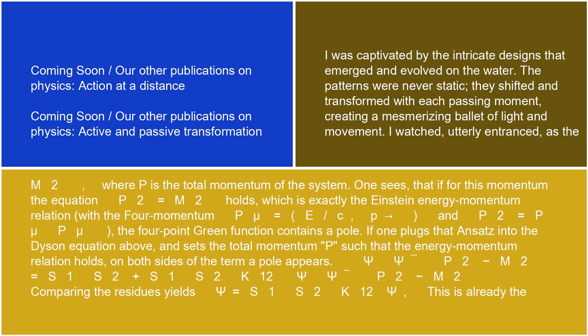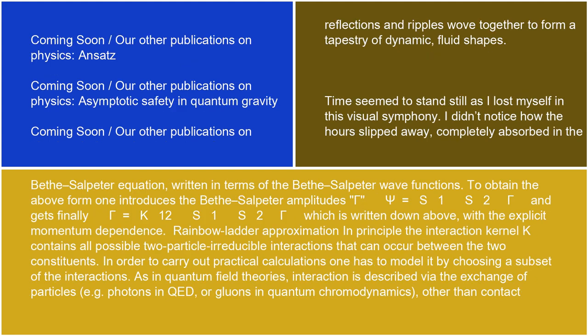One sees that if for this momentum the equation P² = M² holds, which is exactly the Einstein energy-momentum relation with the four-momentum P^μ = (E/c, P) and P² = P^μ P_μ, the four-point Green function contains a pole. If one plugs that ansatz into the Dyson equation above and sets the total momentum P such that the energy-momentum relation holds, on both sides of the term a pole appears: ψψ̄ / (P² − M²) = S₁S₂ + S₁S₂K₁₂ · ψψ̄ / (P² − M²). Comparing the residues yields ψ = S₁S₂K₁₂ψ. This is already the Bethe-Salpeter equation written in terms of the Bethe-Salpeter wave functions. To obtain the above form, one introduces the Bethe-Salpeter amplitudes Γ via ψ = S₁S₂Γ, and gets finally Γ = K₁₂S₁S₂Γ, which is written down above with the explicit momentum dependence.